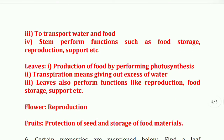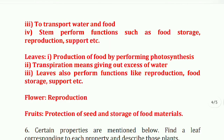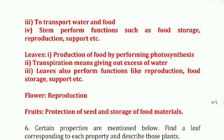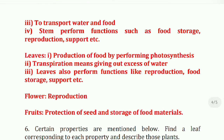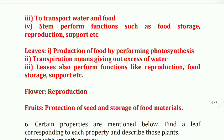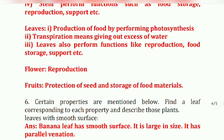Stem also performs functions such as food storage, reproduction, and support. Leaves: production of food by performing photosynthesis, transpiration — giving out excess water — and leaves also perform functions like reproduction, food storage, and support. Next, flower: the function of a flower is reproduction.